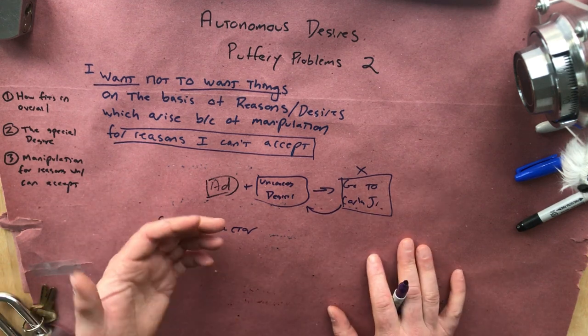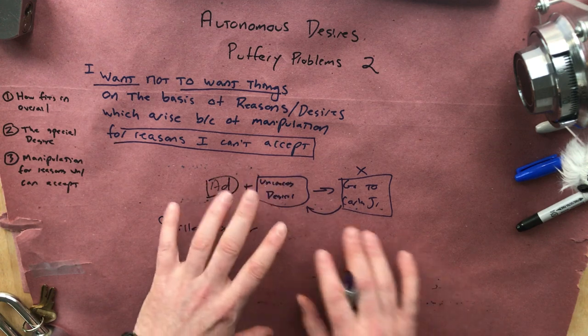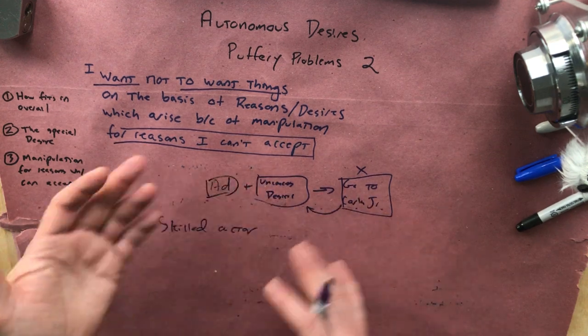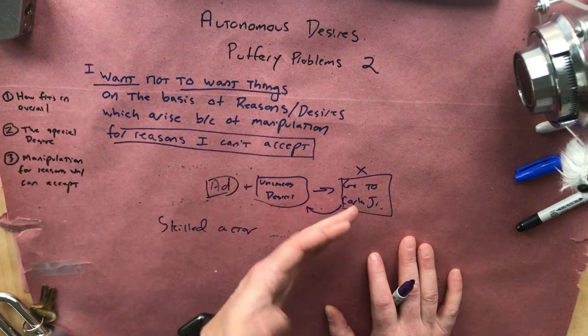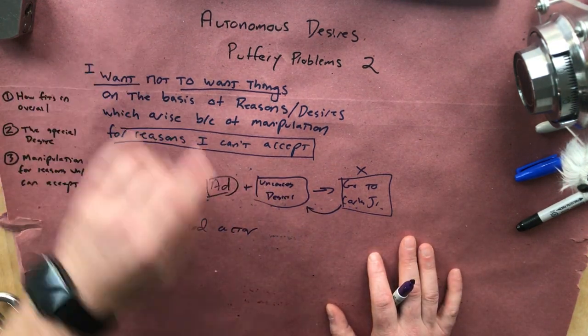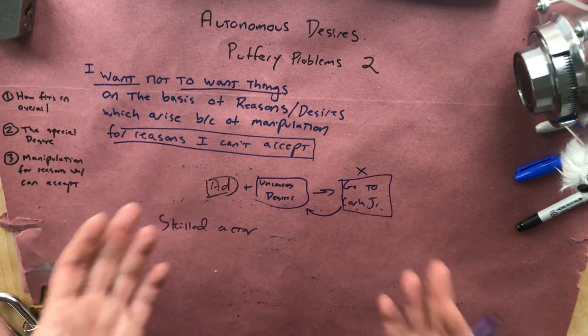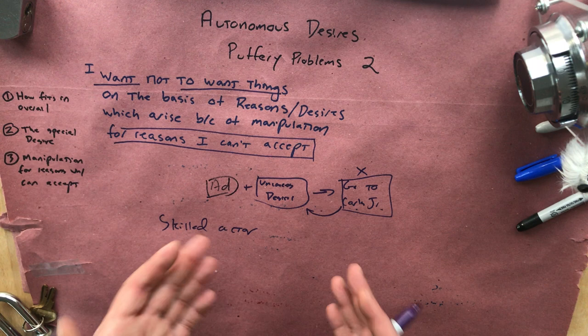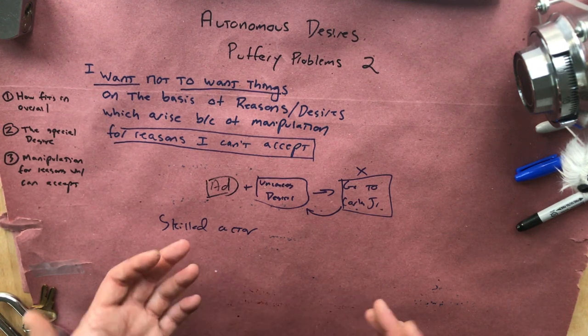If things are working in the way that Crisp is portraying, where you have absolutely no control over whether or not you have this desire, you see the ad and you're just helpless. Okay, fine. Again, that's the kind of manipulation that because you are so helpless and because it's manipulating you into doing something that's spending money, etc., sure, maybe it is implausible that there's anybody who could be like, yeah, I'm totally fine with that kind of manipulation.